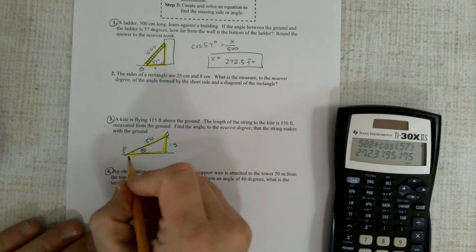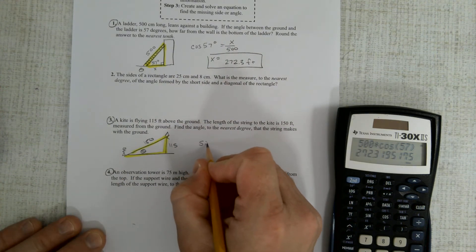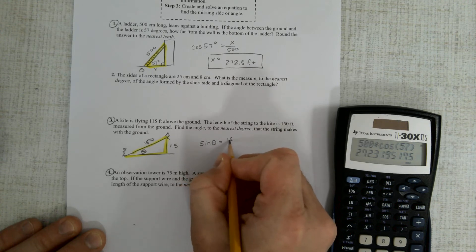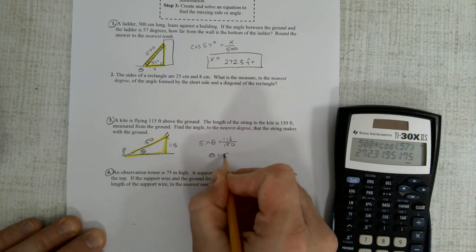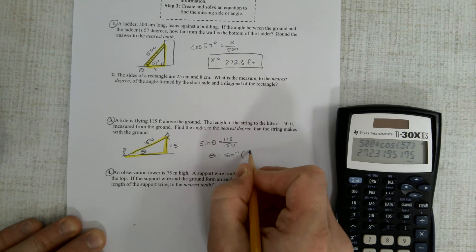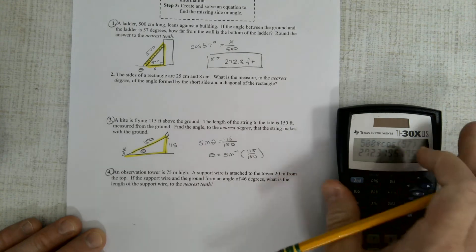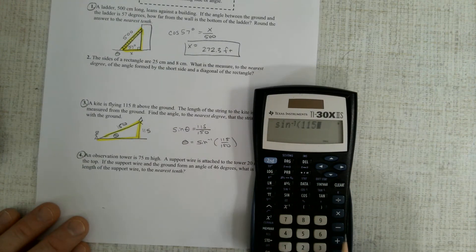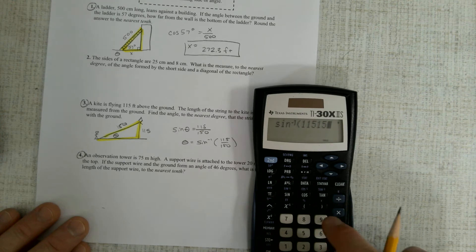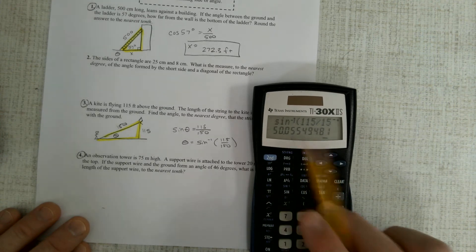All right, well, what is that? If this is theta, then that's opposite over hypotenuse. That's sine, sine of theta is opposite over hypotenuse. So theta is equal to the inverse sine of that amount. And again, make sure you're in degrees and do inverse sine, 115 over 150, and about 50 degrees.